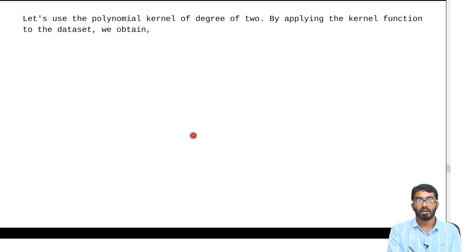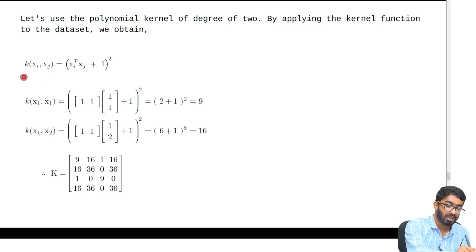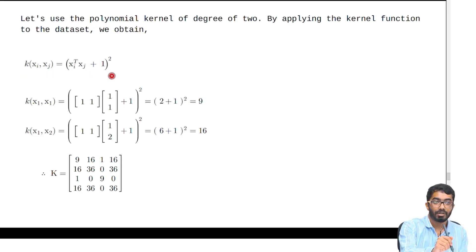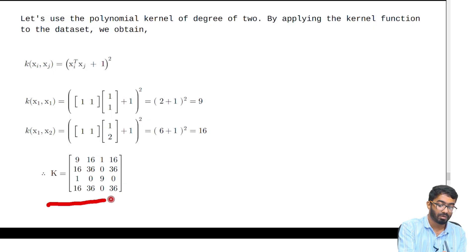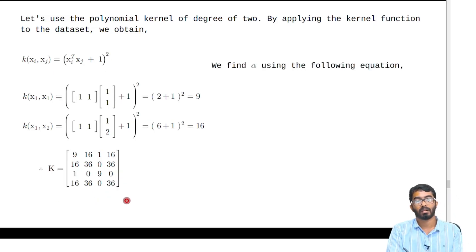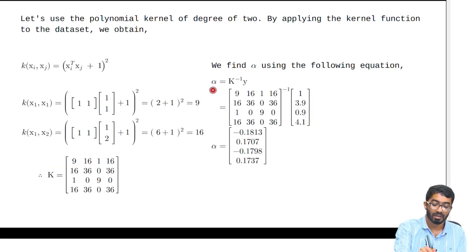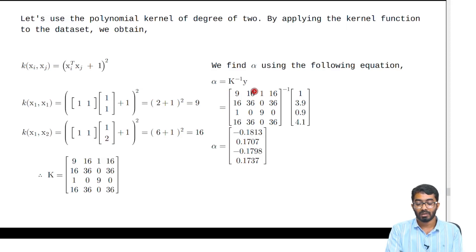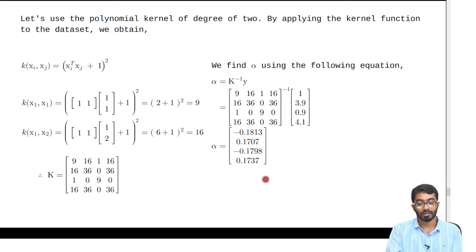Let's use the polynomial kernel of degree 2 on our data set. This is the polynomial kernel of degree 2, and solving further, we get K equal to this matrix. Now let's find alpha using our equation K^{-1} y. Plugging in the values of K inverse and y, we get alpha equal to this vector.